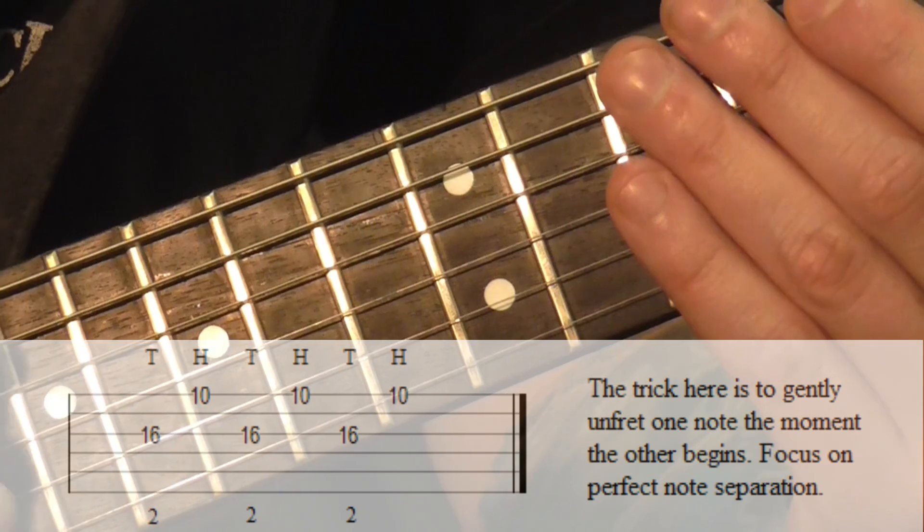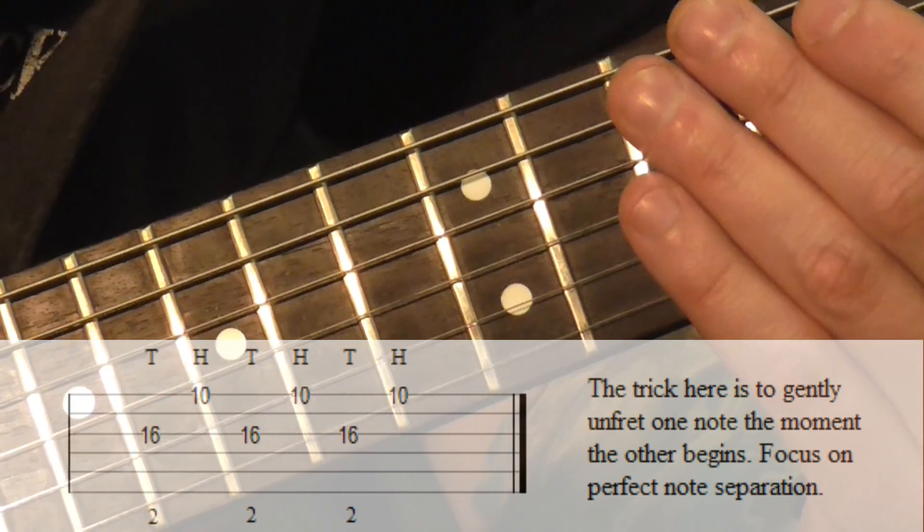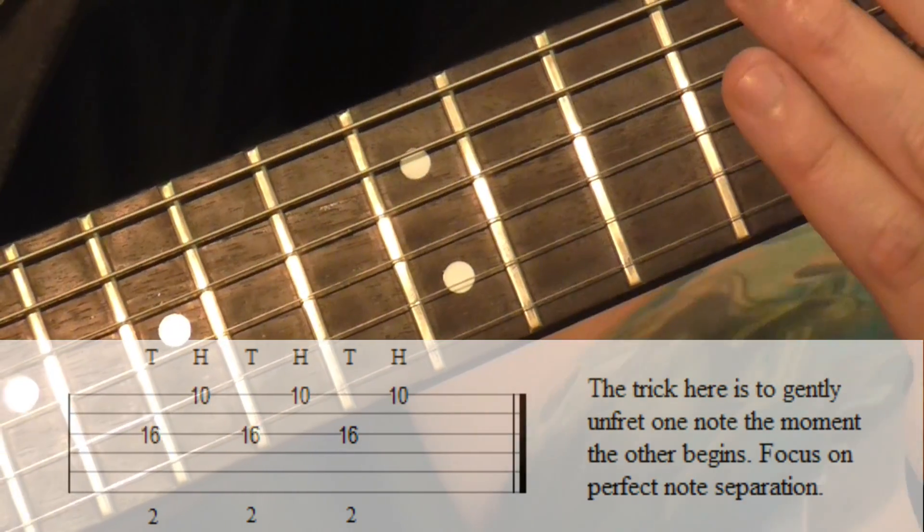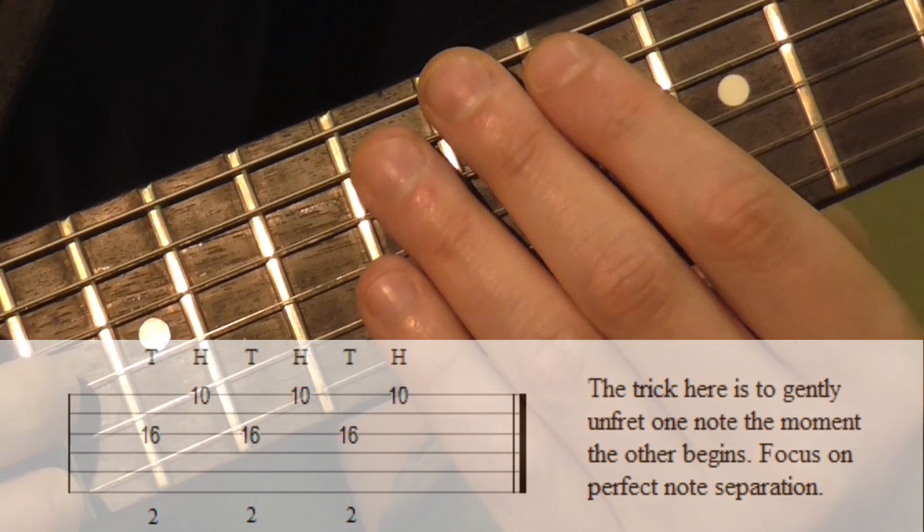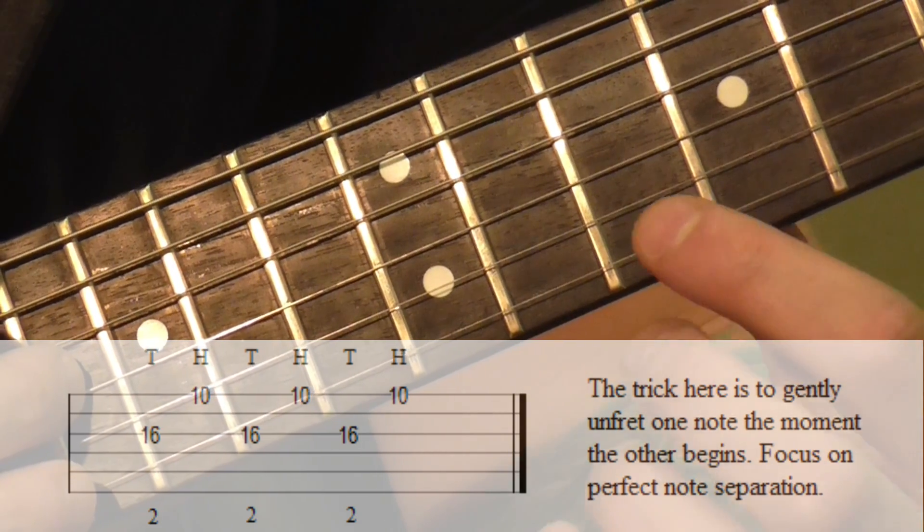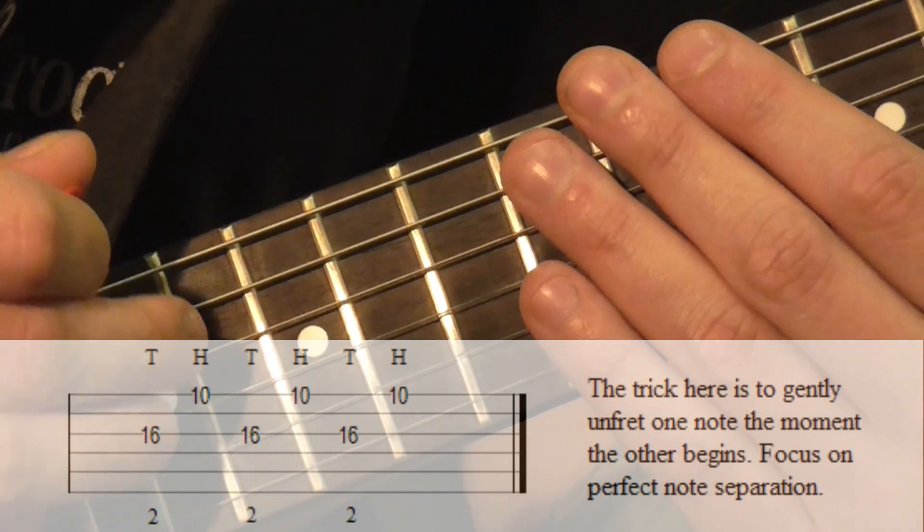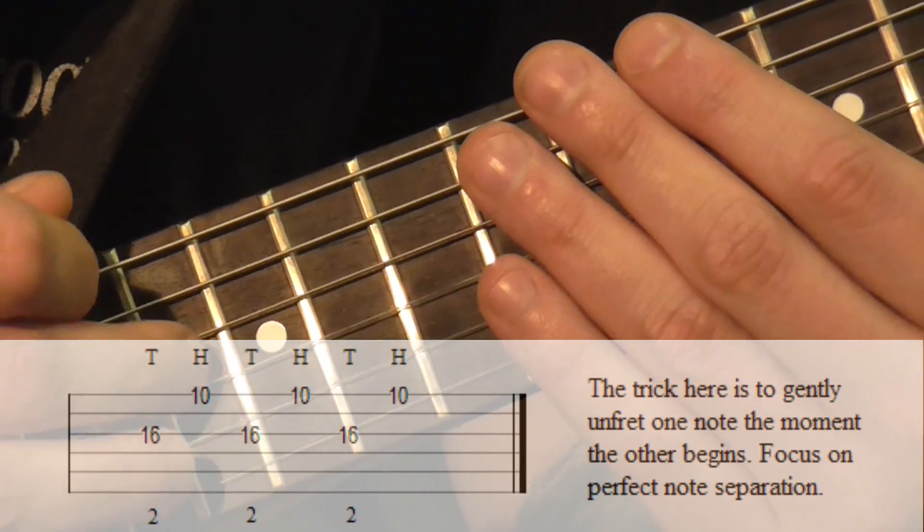I call this the seesaw exercise because you just go back and forth between two notes, and it's incredibly annoying but incredibly effective. The trick here is as you go to play the second note, the moment you hammer on from nowhere, you gently unfret and then release the tap note.